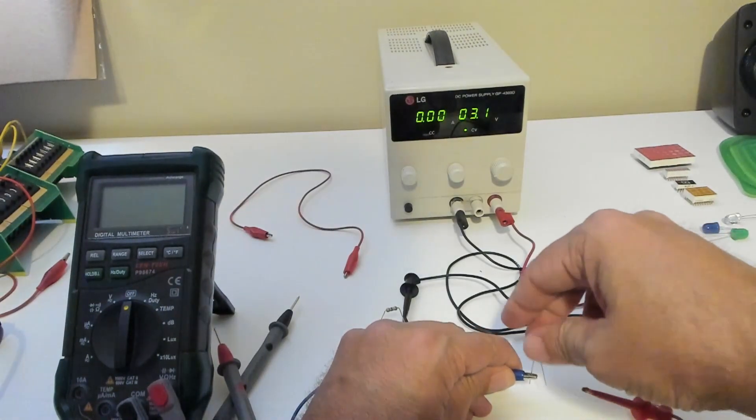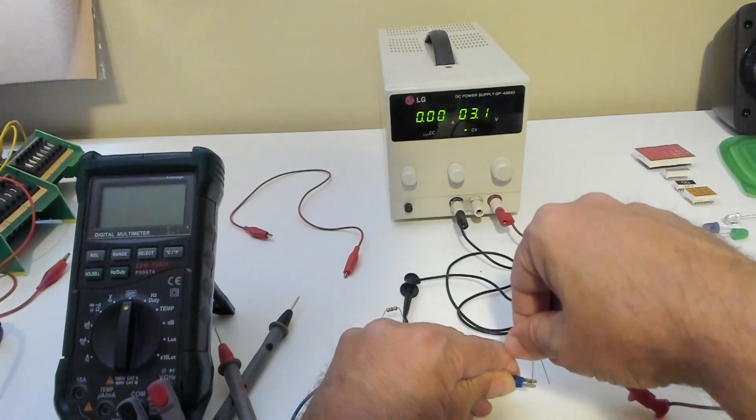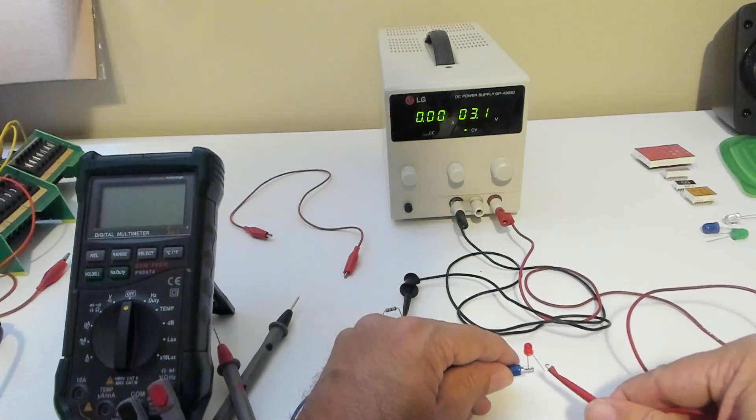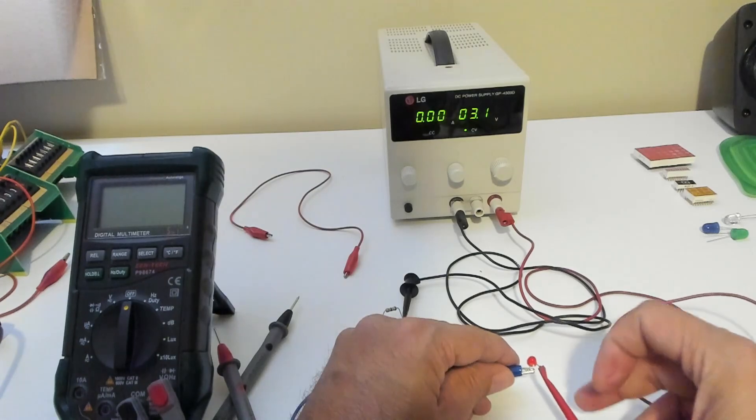Now we're going to reverse the orientation so that the anode connects to the negative and the cathode goes to the positive and you'll see the light doesn't turn on.